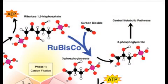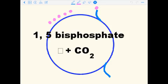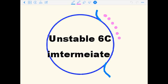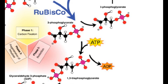First, the 5-carbon molecule ribulose 1,5-bisphosphate reacts with carbon dioxide. As a result, 2 molecules of 3-phosphoglycerate are produced.